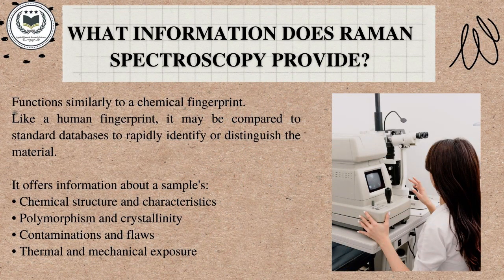What information does Raman Spectroscopy provide? It works in the same way as a chemical fingerprint. It can be compared to conventional databases, much like a human fingerprint, to quickly identify or distinguish the material. It provides details on a sample's chemical structure and properties, polymorphism and crystallinity, contaminations and defects.